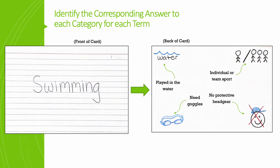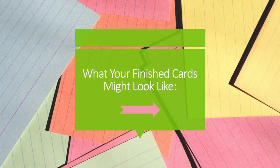We're then going to identify the corresponding answer to each category for each term. For the swimming example, the front of the card will say 'swimming' and the back will have the answers to each of those category questions. So for swimming: it's played in the water, it could be either an individual or team sport, you need goggles, and no protective headgear is required. So what might your finished cards look like?